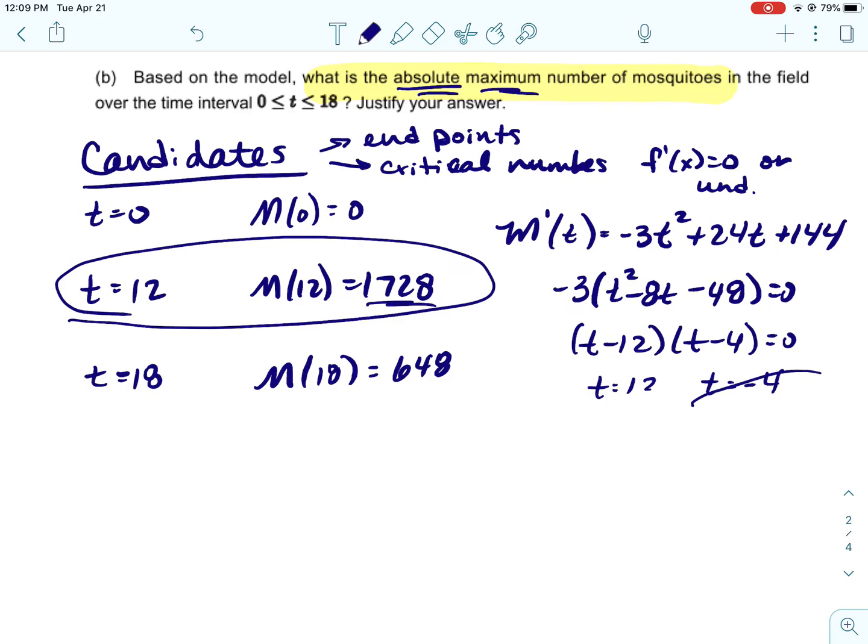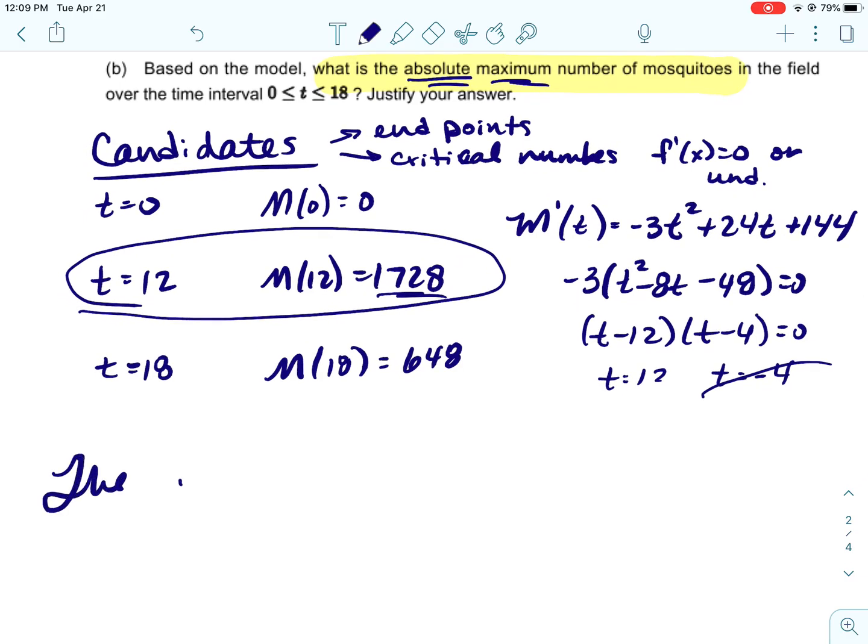And make sure we answer the question. So we want the absolute maximum number of mosquitoes. It doesn't say which day was their maximum number. It would be the 12th day. We actually want to know the number of mosquitoes, which is this. So that's that thing I talked about where you're figuring out where does the maximum live or what is the maximum. So this one is what is the maximum.